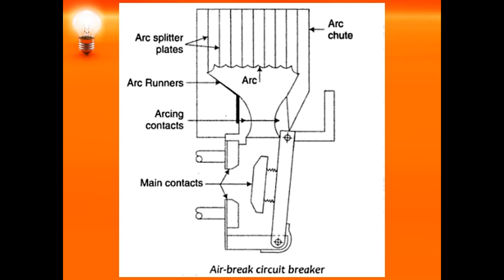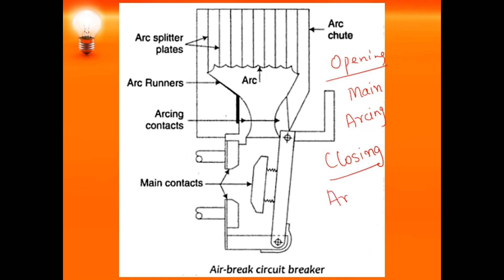The sequence of operation is as follows. During opening, that is when a fault occurs, the main contacts are opened first, and after that the arcing contacts are opened. During closing, once the fault is cleared, first the arcing contacts are closed and after that the main contacts are closed. This is the sequence of operation of the main contacts and the arcing contacts, through which the arc is formed and moved.